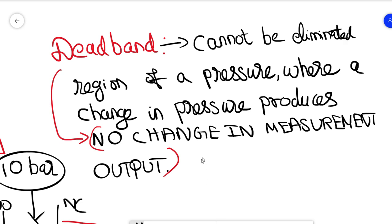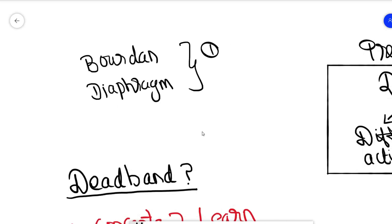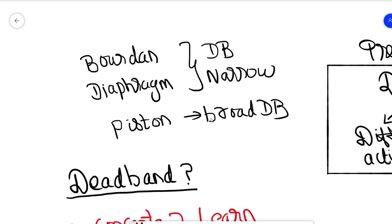Normally, a Bourdon tube and diaphragm switches typically have narrow deadband, while piston switches have broad deadband. So we have to choose wisely on this pressure switch depending upon the minimal deadband as per the process requirement.